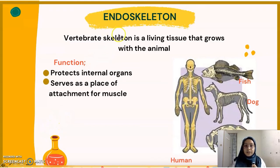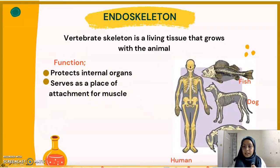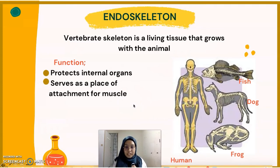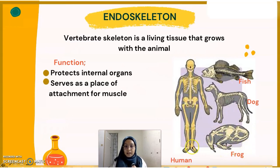The third characteristic is the endoskeleton. The vertebrate skeleton, either bone or cartilage, is a living tissue that grows with the animal. The endoskeleton protects internal organs and serves as a place of attachment for muscles. The skeleton and muscles form a system that permits rapid and efficient movement — such as pectoral and pelvic fins in fish, and four limbs for movement in terrestrial tetrapods like frogs.